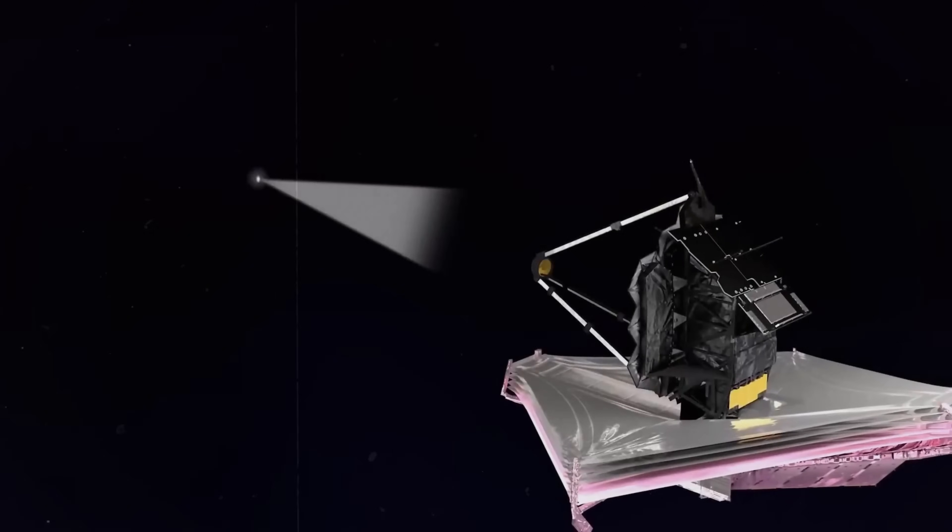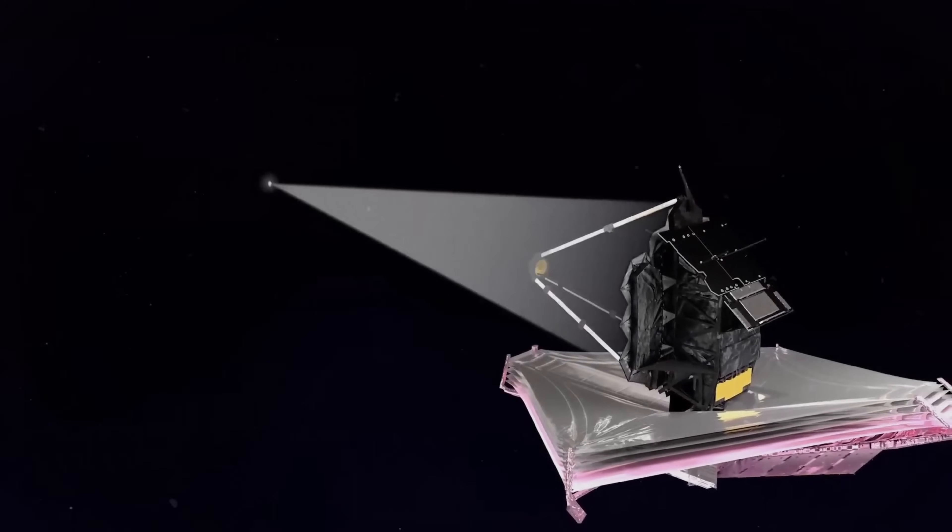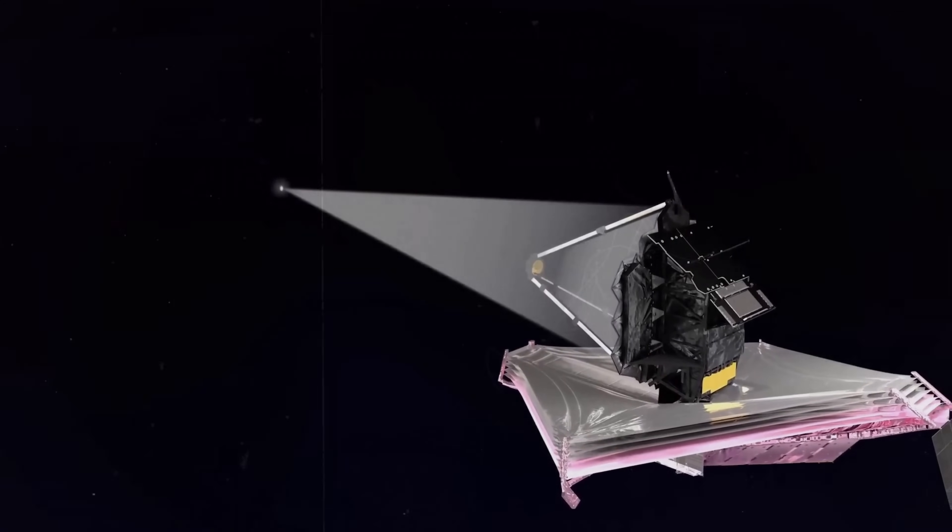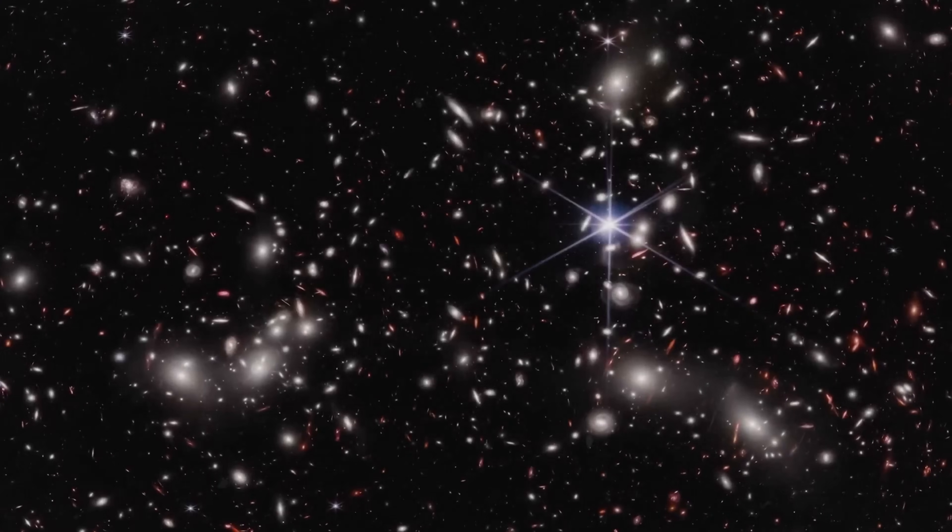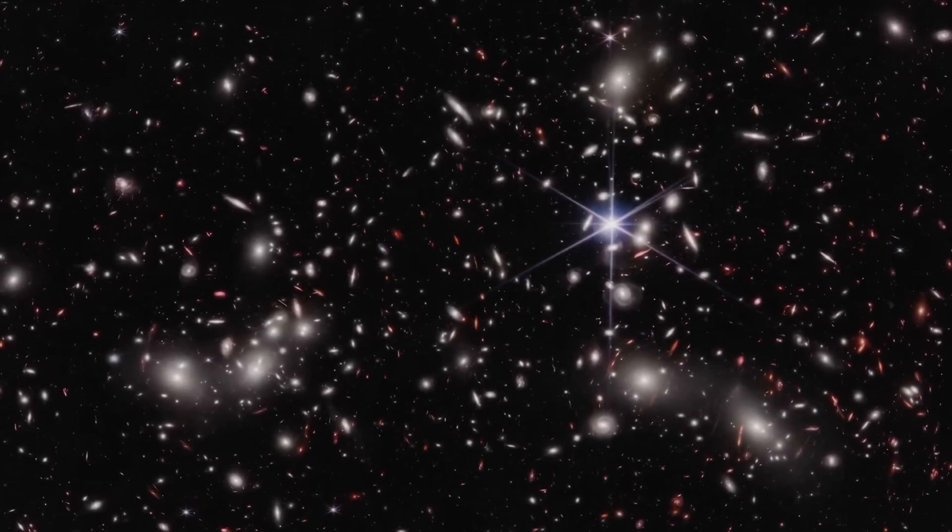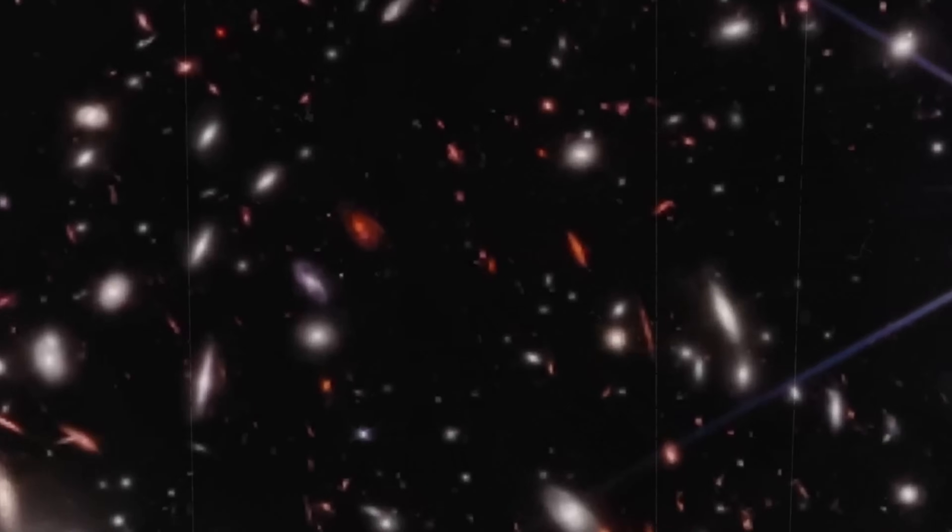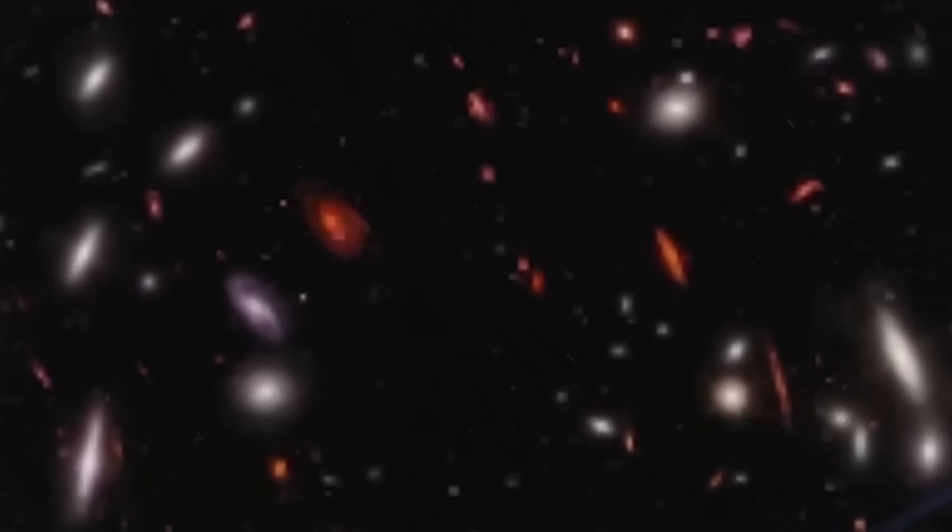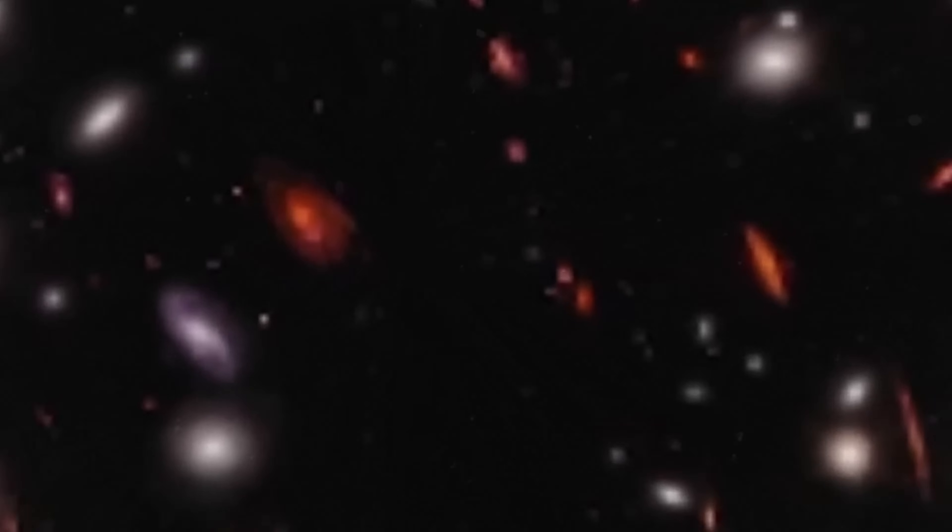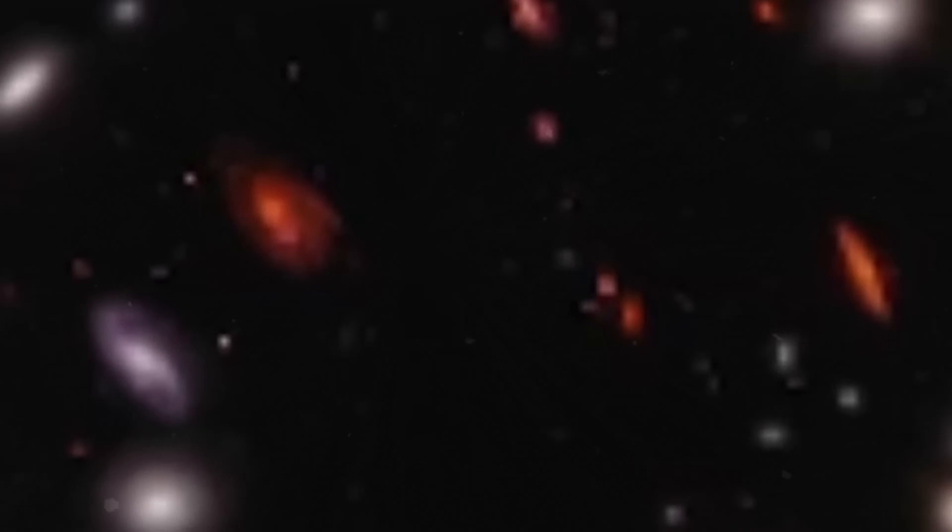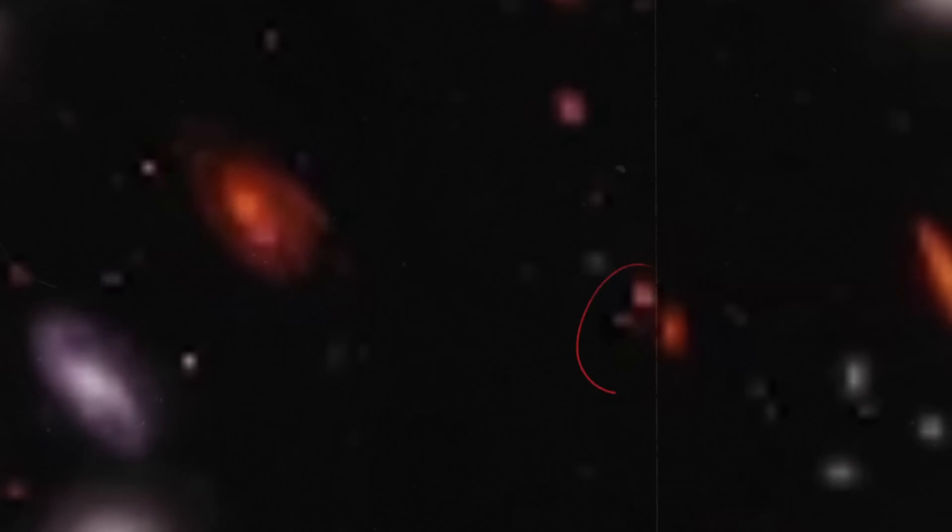The discoveries made by the James Webb Space Telescope are throwing a wrench into our current understanding of galaxy formation and evolution. Traditionally, scientists expected that as we look deeper into the universe, especially into the early universe, we should see fewer galaxies, and they should be smaller and less organized. This is based on the assumption that galaxies took longer to form and develop complex structures.